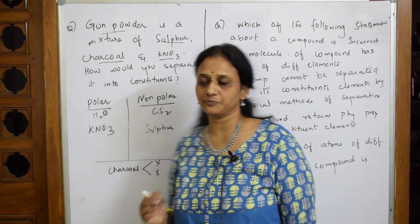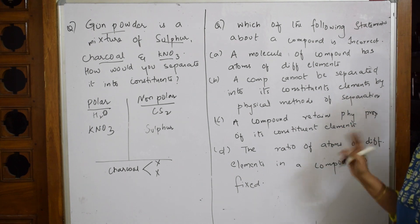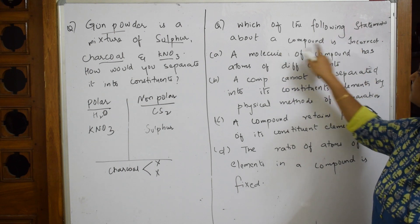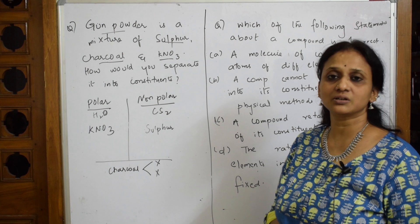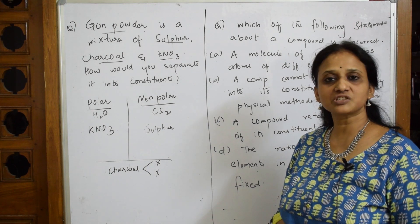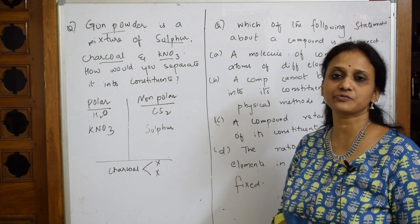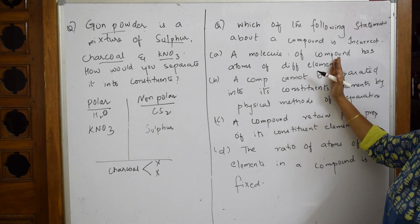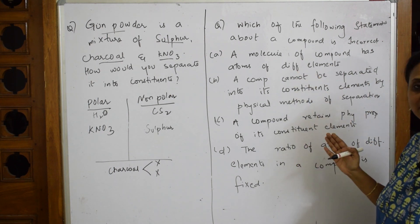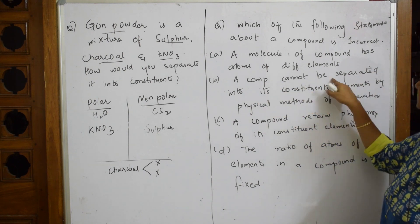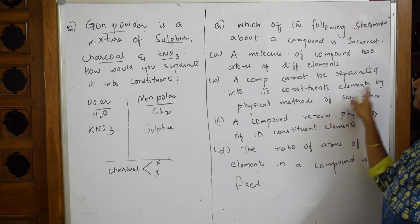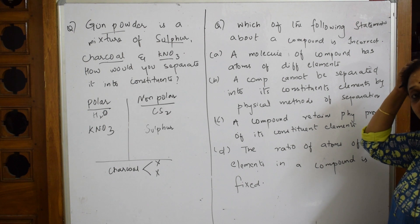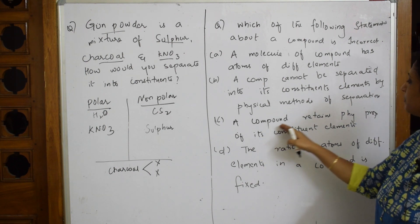Now let's see an NCERT Exemplar question: which of the following statements about a compound is incorrect? We've already studied the differences between compounds and mixtures. Statement A: a molecule of a compound has atoms of different elements — that is a correct statement. Statement B: a compound cannot be separated into its constituent elements by physical methods — that is also true.